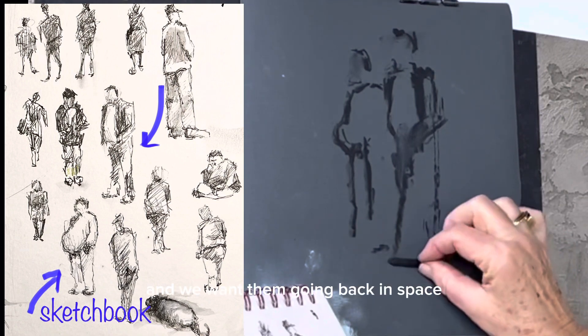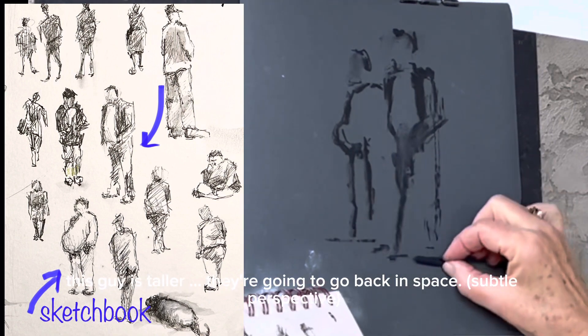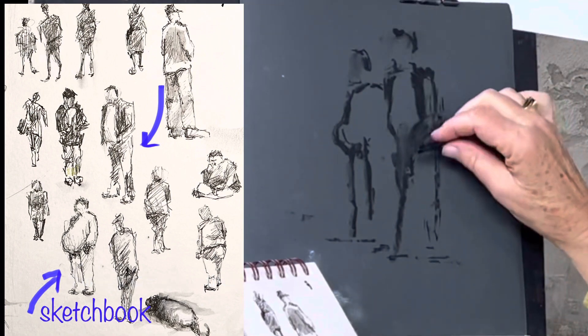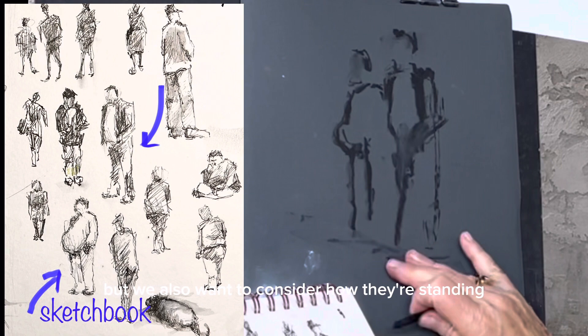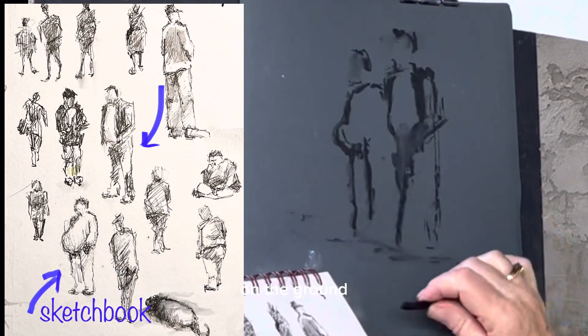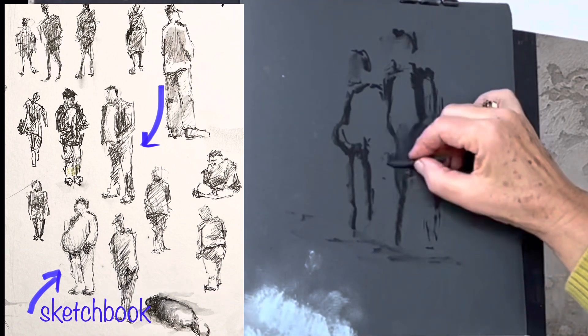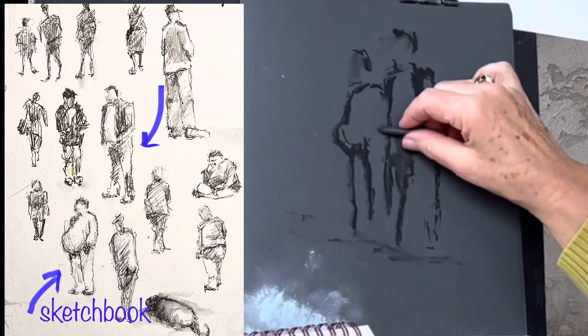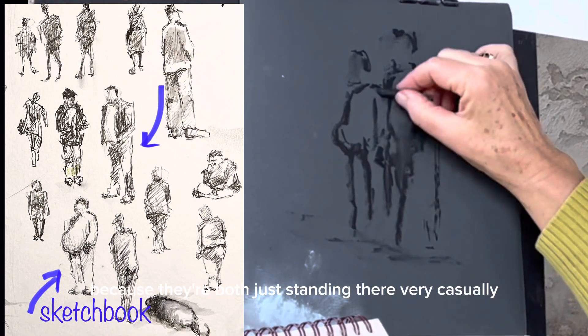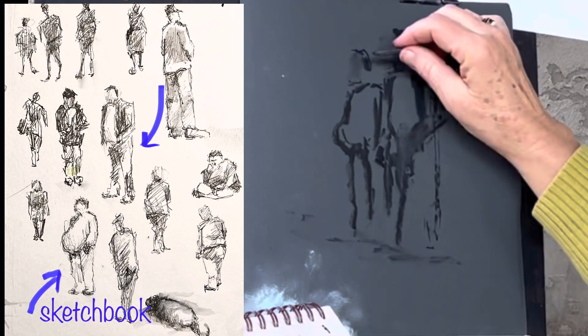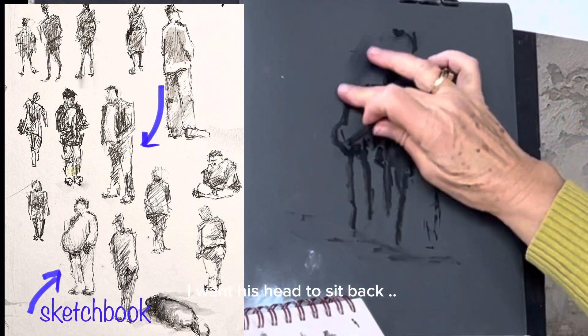And we want them going back in space. This guy's taller, they're going to go back in space. So the second man has to be a little shorter, but we also want to consider how they're standing on the ground. He also has his hands in his pockets, because they're both just standing there very casually.